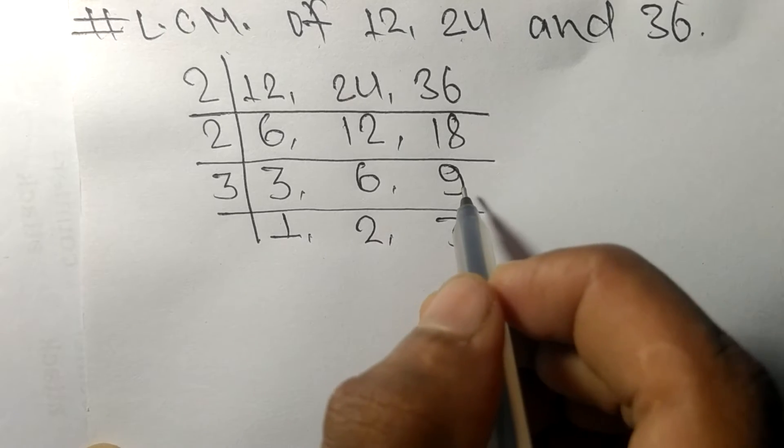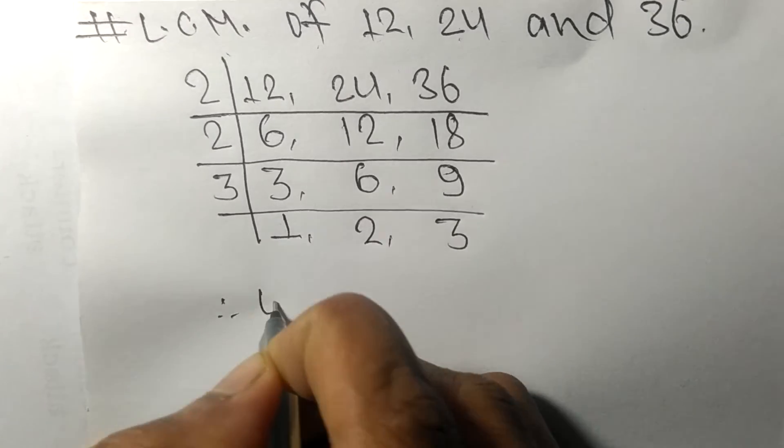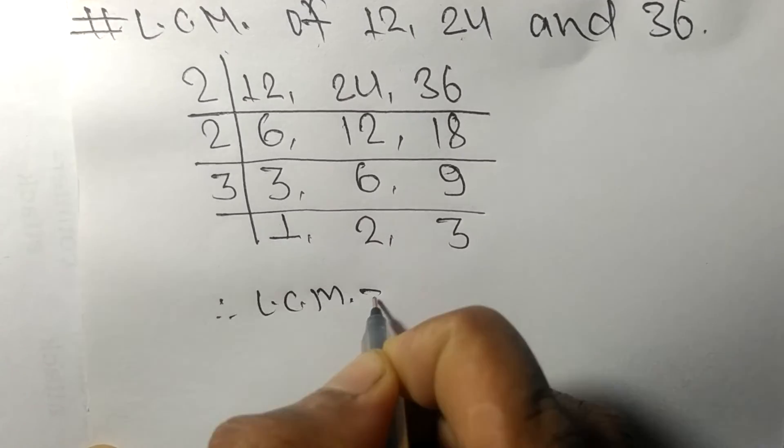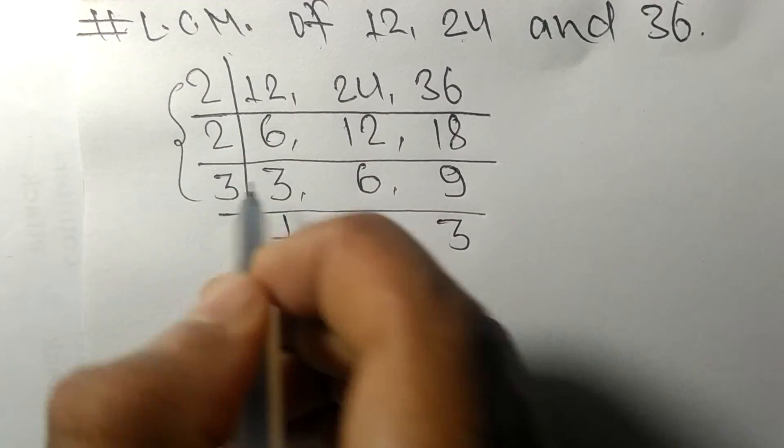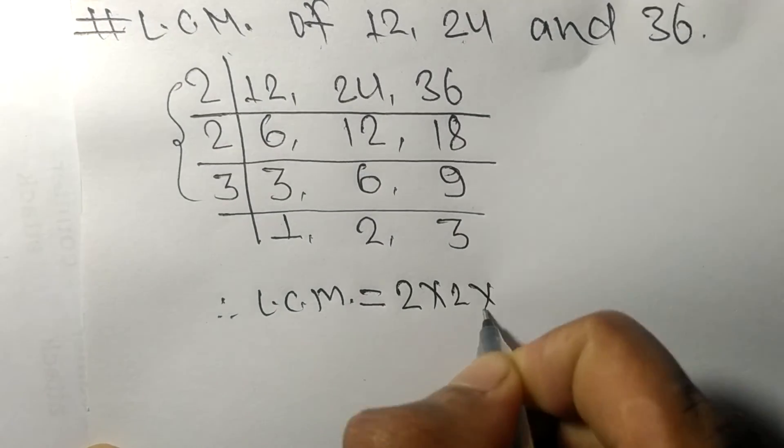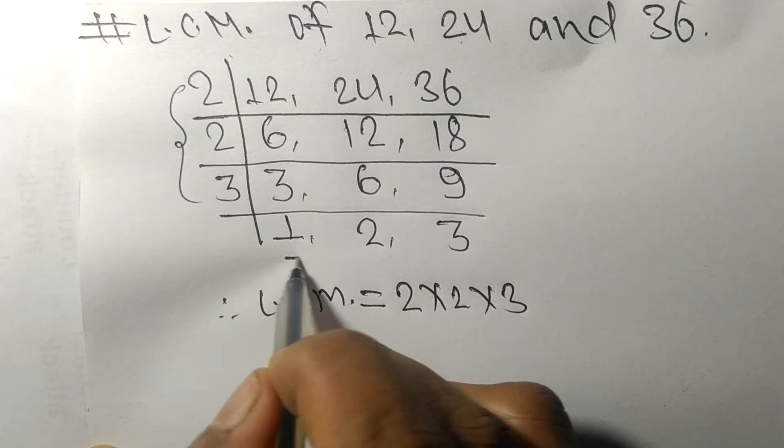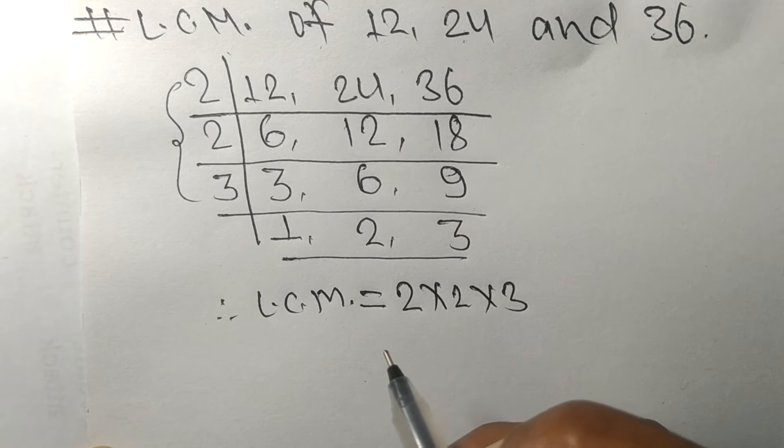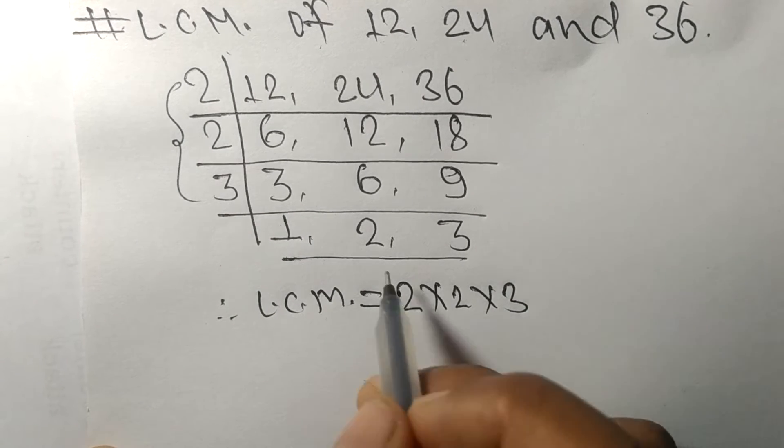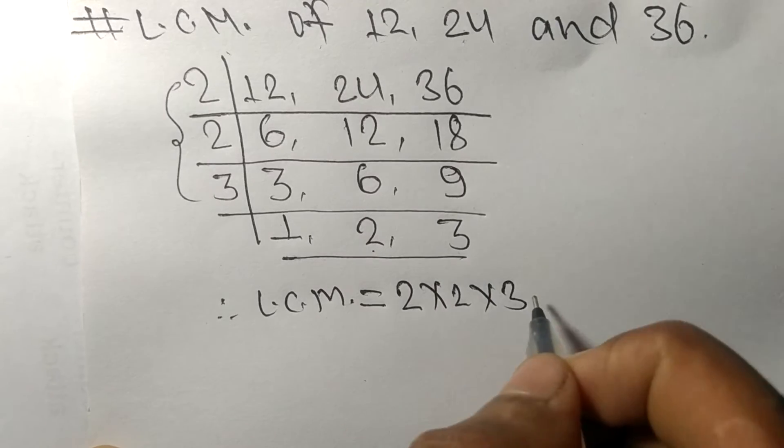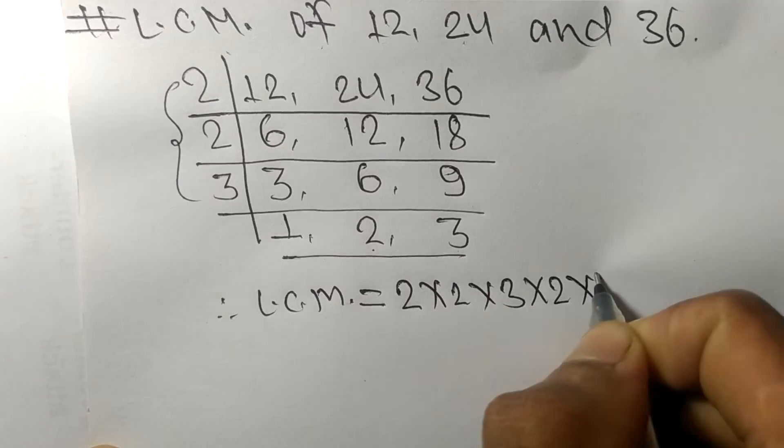So its LCM is equal to, from this side it is 2 times 2 times 3. From this side we choose the numbers greater than 1, that is 2 and 3.